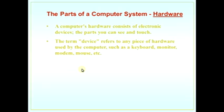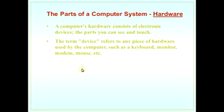Let's see the parts of a computer system — hardware. Computer hardware consists of electronic devices, the parts you can see and touch. So we can touch and see the hardware. Hardware refers to electronic devices. A device refers to any piece of hardware used by a computer, such as a keyboard, monitors, mouse, modem, etc.